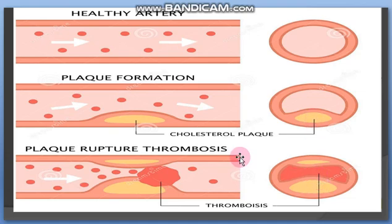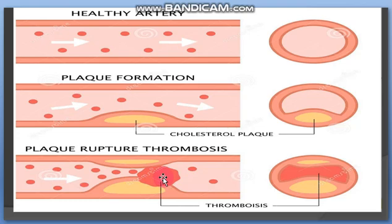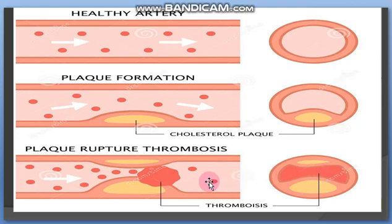Jitni plaque zyada hogi, utni zyada badhti jaayegi — aur internal endothelium layer damage ho jaati hai. Platelets aakar deposit ho jaate hain — isi se embolus banta hai. Agar embolus travel kare to kisi chhote lumen wali artery mein fas jaata hai. Agar woh artery mein hi fasa rahe, artery completely block ho jaati hai aur oxygen aur nutrients us organ tak nahi pahunchte — yeh atherosclerosis hai jo un organs ko damage karti hai jahan blood supply hoti hai.